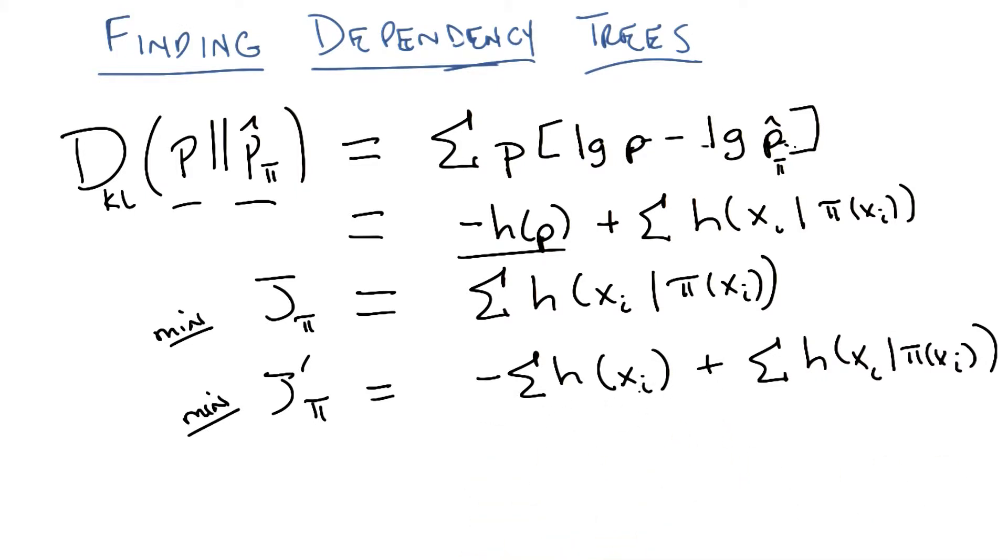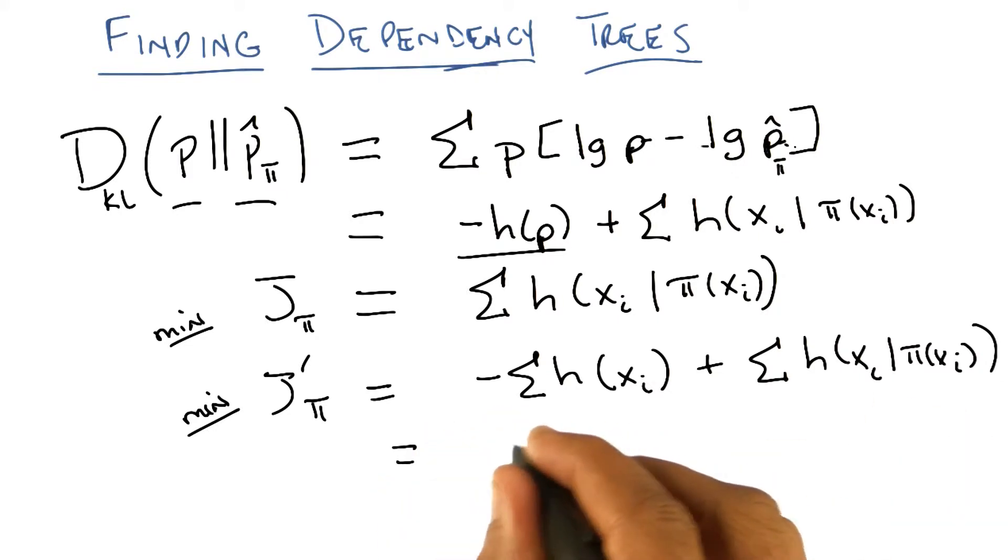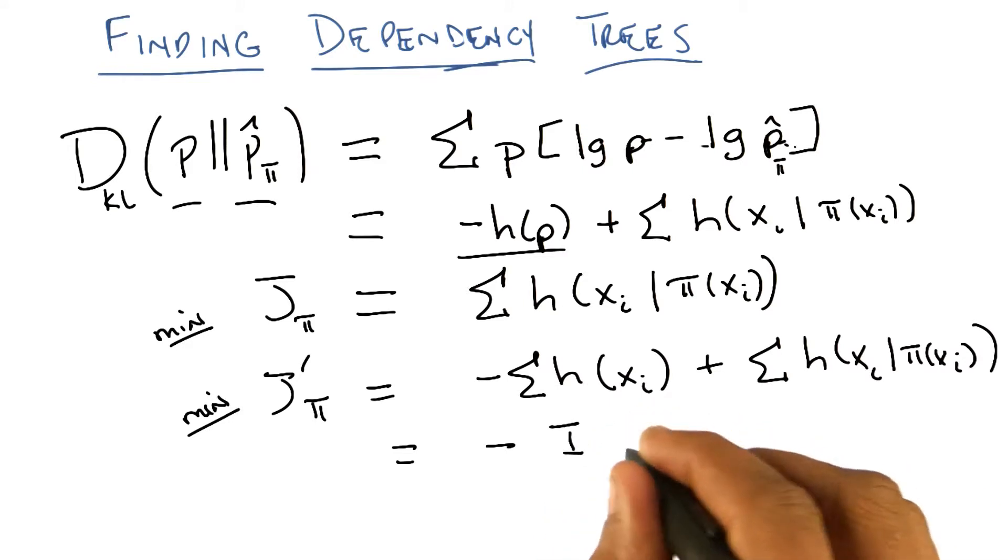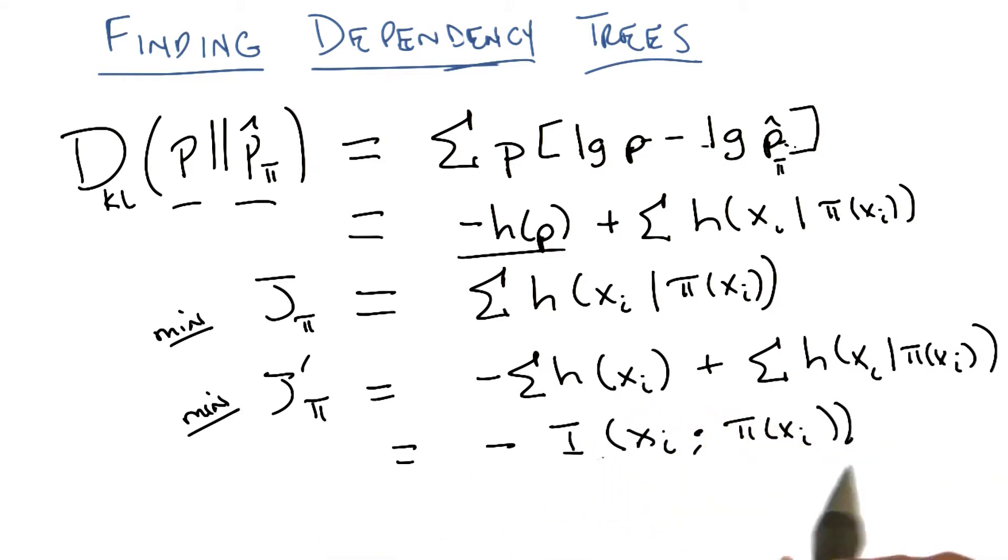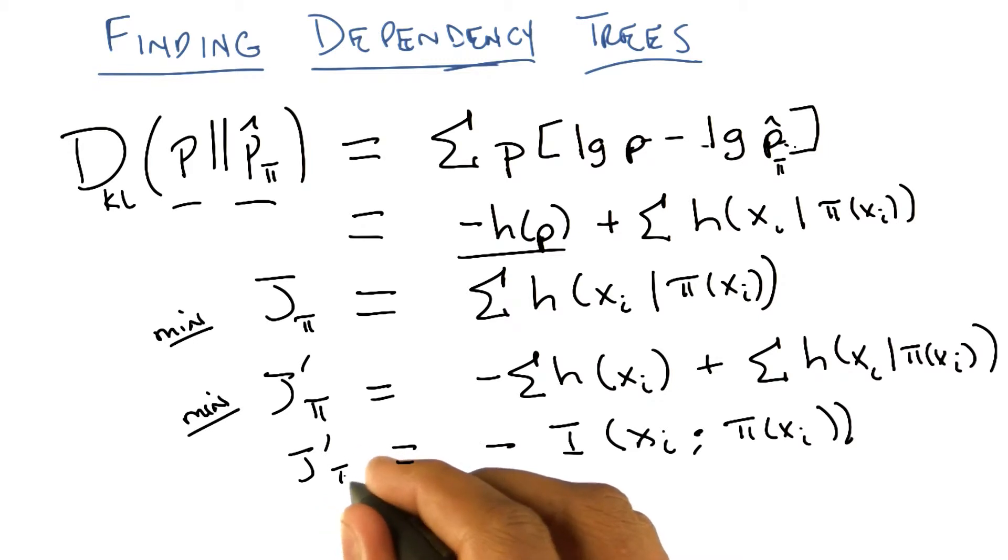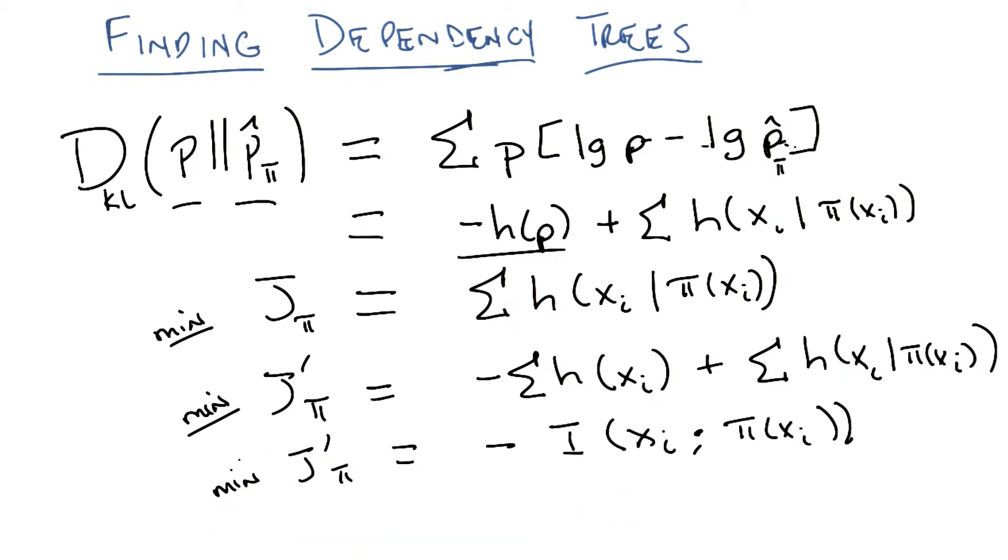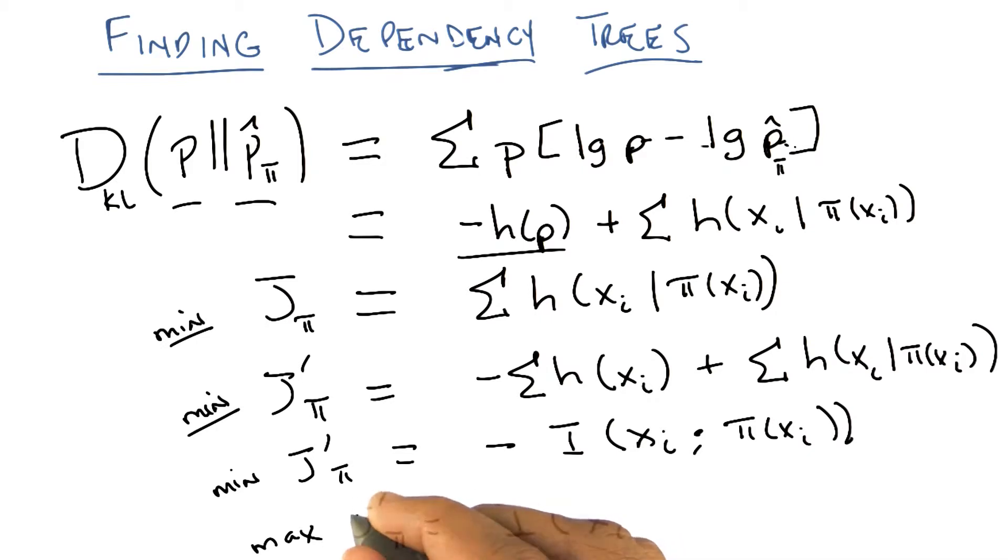But by adding this term, I've actually come up with something kind of cute. What is this expression, Michael? It looks kind of familiar from information theory. Is that cross entropy? No, though sort of, but no. Is it mutual information? It is in fact mutual information. In fact, it's the negative of mutual information. So minimizing this expression is the same thing as maximizing mutual information.